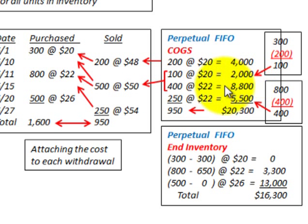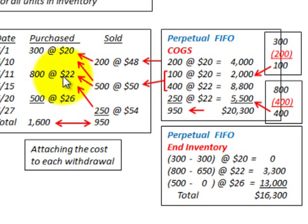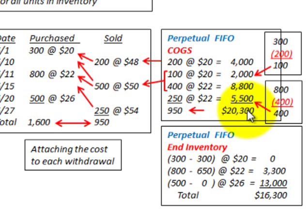For the final sale of 250 units, we still have units remaining in the 800-unit batch. We used 400 from that batch, leaving 400 remaining, and we're only selling 250 of those. So 250 units at $22 each gives $5,500. Summing all sales, the total cost of goods sold is $20,300 — the same as the periodic FIFO method.